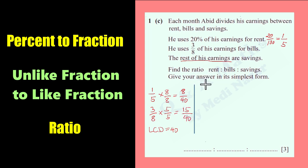And then we can compute for the rest of his earnings. The rest of his earnings is equal to 40 over 40. What is this 40 over 40? This is the whole earnings of Abhi in a month, 100%. We will subtract this 8 over 40 and 15 over 40 to get the rest of his earnings for savings. So 40 over 40 minus 8 over 40 minus 15 over 40 equals 17 over 40.